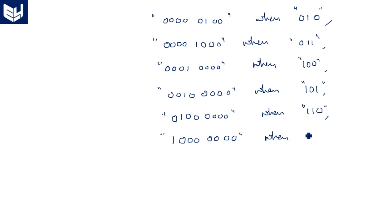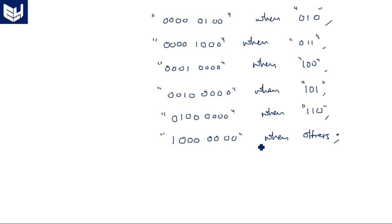The last statement in `with...select` must be `others`. `Others` specifies that the `with...select` conditional statements are completed. If you don't put `others` it shows an error — the program is still searching for the last line. You can also keep `"111"` as the last condition, but `others` tells the program that the statements are complete.